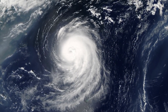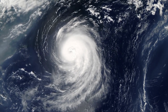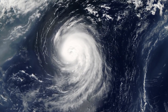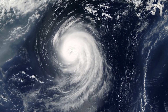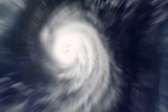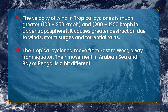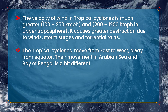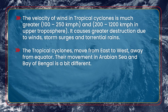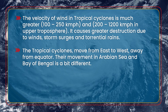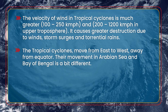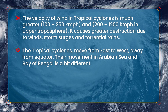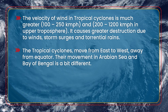Tropical cyclones bring heavy rainfall but do not last beyond a few hours. If the cyclone stays at a place, the rainfall may continue for many days, but doesn't last for more than a week. The velocity of wind in tropical cyclones is much greater — it can be 100 to 250 km per hour and 200 to 1200 km per hour in the upper troposphere. It causes great destruction due to winds, storm surges, and torrential rains. Tropical cyclones move from east to west, away from the equator.